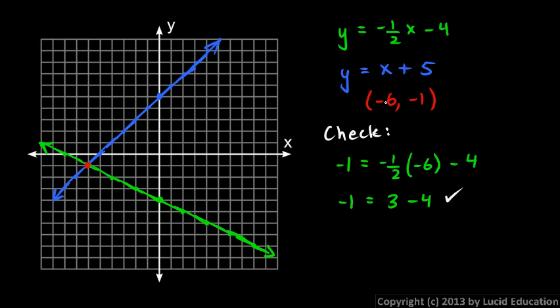Okay, let's try the other equation also. We're going to put in negative 1 for y, and say, does that equal, put in negative 6 for x, negative 6 plus 5. And that works also. Negative 1 is, in fact, negative 6 plus 5. So we algebraically have verified that that is, in fact, the solution to this system of equations.